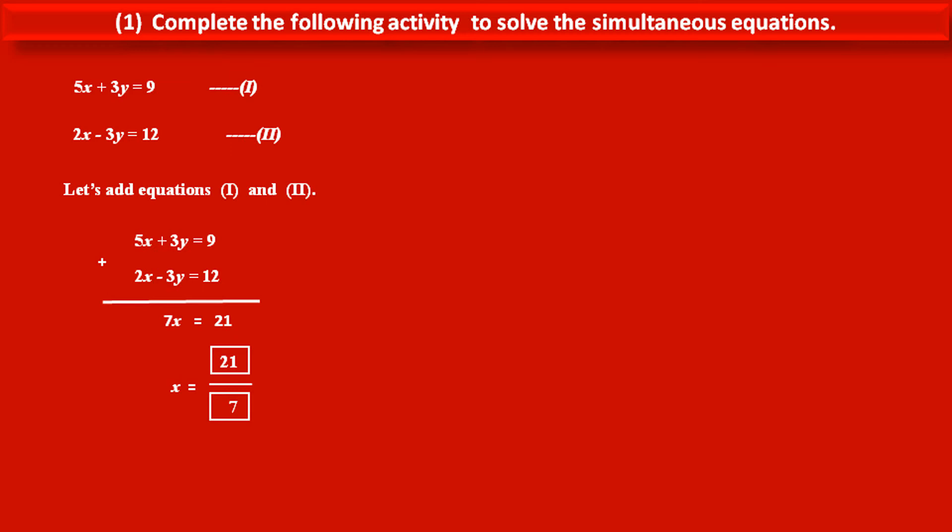As we have to divide both the sides by 7, so denominator is 7. Therefore, x is equal to 21 upon 7, that is 3. So in third box, we have to write 3.